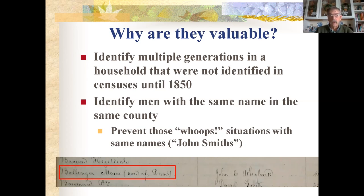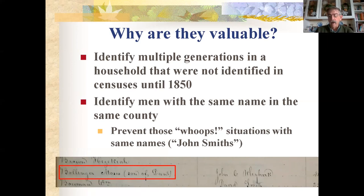You can also identify men with the same name in the same county that might not be distinguishable with other records. If there are two, three, or four people with the same name in a tax list, you have to account for multiple individuals. Some tax lists will even specify a relationship: 'Moses Bullinger, son of Daniel' — you actually get the relationship identified in that case.